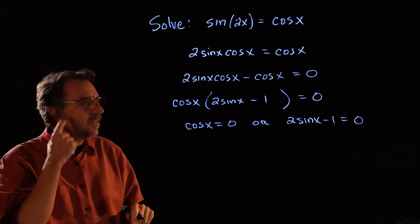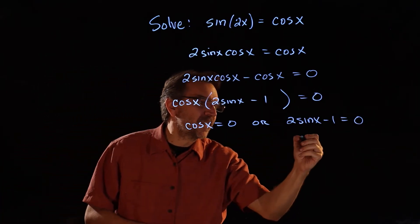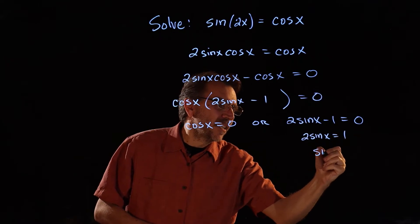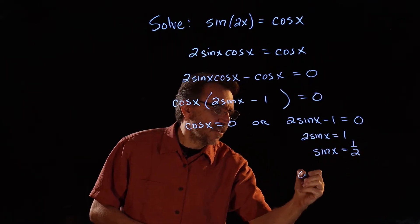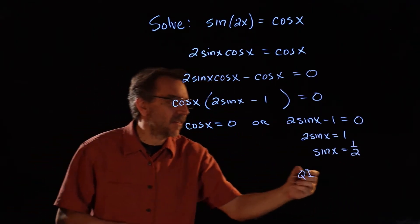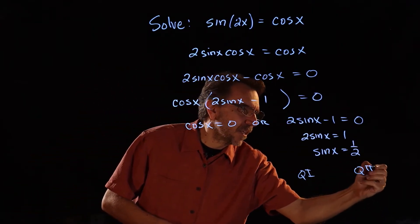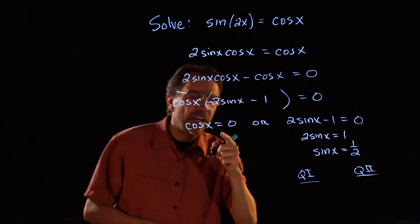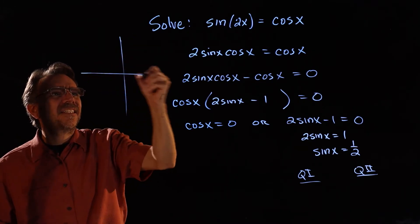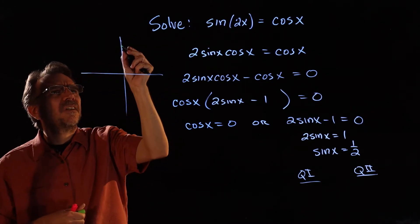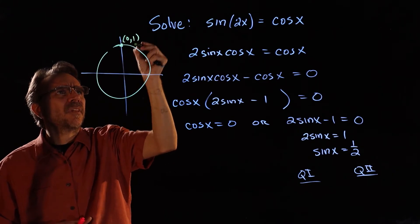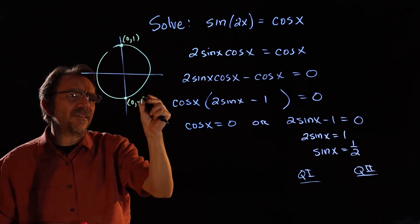We can solve each one of those individually. Here if I solve for sine x, I'll have 2 sine x equals 1, sine x equals 1 half. So that's going to have a Q1 answer because it's positive, and also a Q2 answer. Now, when I'm looking at cosine x equals 0, we can see on the unit circle cosine is 0 at 90 degrees and 270 degrees.